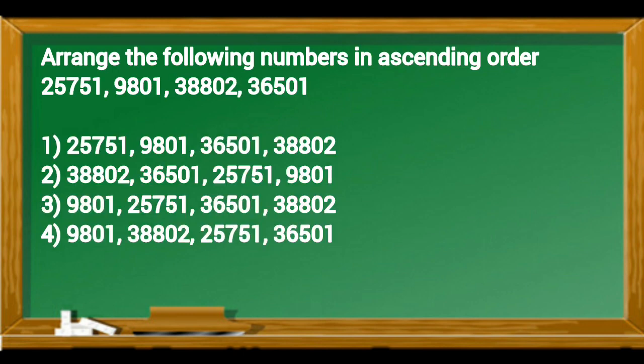Arrange the following numbers in ascending order. In this sum given numbers are 25,751, 9,801, 38,802, 36,501. To arrange these numbers into ascending order, arrange them smallest to greatest.